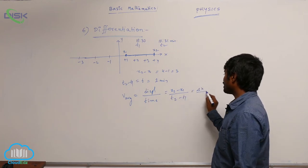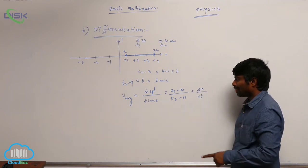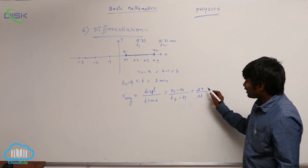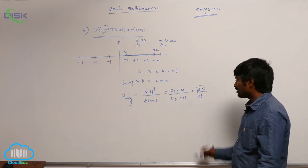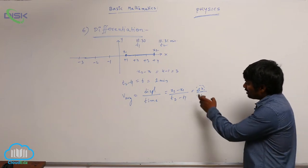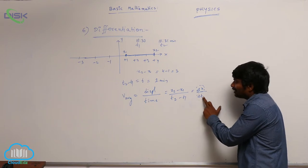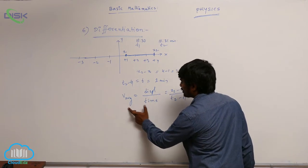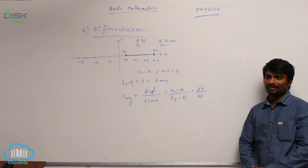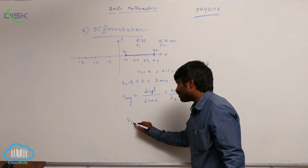This can be written as delta x by delta t — a small displacement divided by the small time duration taken. We call this the change of x with respect to time. By studying this, we are indirectly studying average velocity.